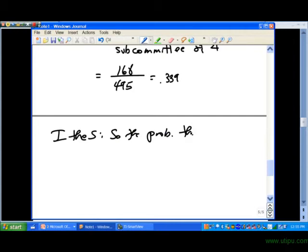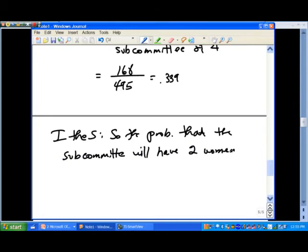So the probability that the subcommittee will have two women and two men is, I'll write 33.9%. All right, so there we go with that. Okay, so that was the first of the methods that we have for computing probabilities, classical probability.